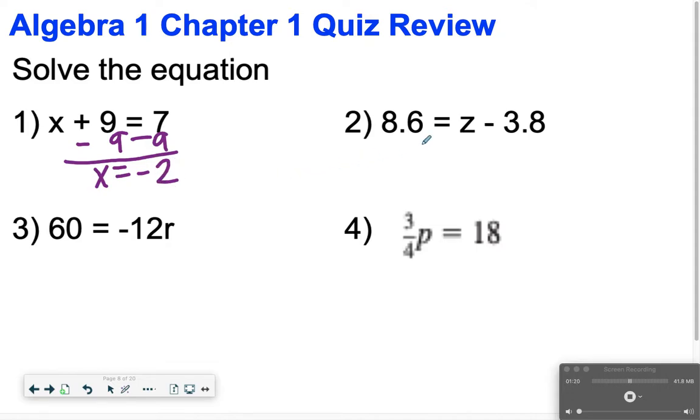For number 2, I'm going to add 3.8 to both sides. I'm using a new stylus here, so just bear with me as we get this going. 8.6 plus 3.8 is 12.4. So that is equal to z for number 2.